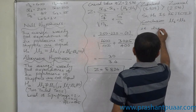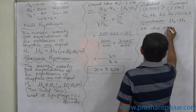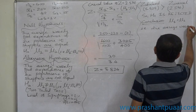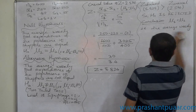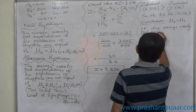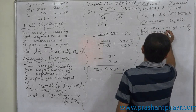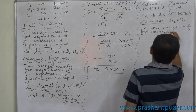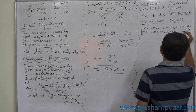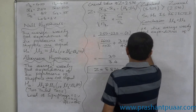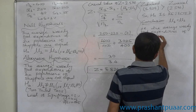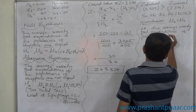Conclusion: The average weekly food expenditures of the two populations of shoppers are not equal.